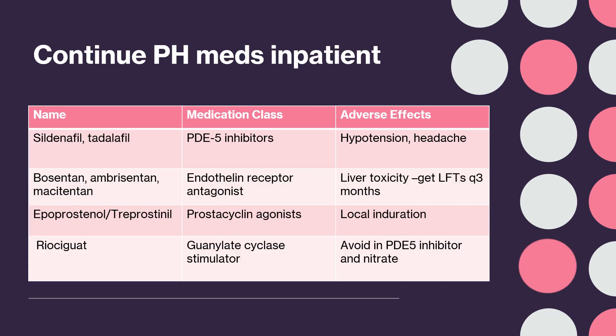The most important takeaway is that you must continue pulmonary hypertension medications inpatient. If you do not, the patient could develop rebound pulmonary hypertension leading to right-sided heart failure.